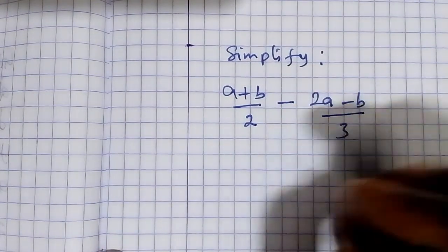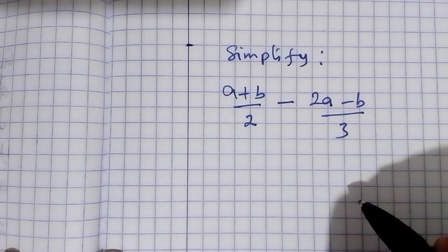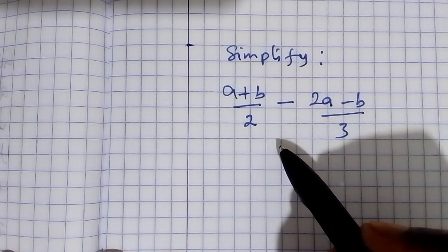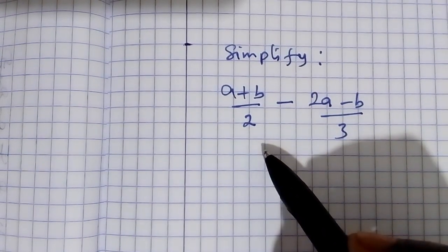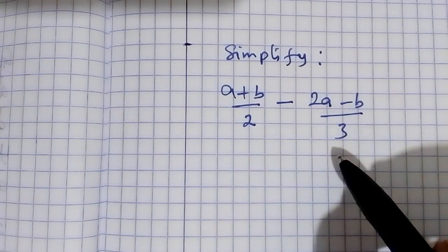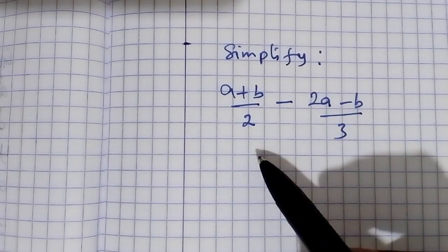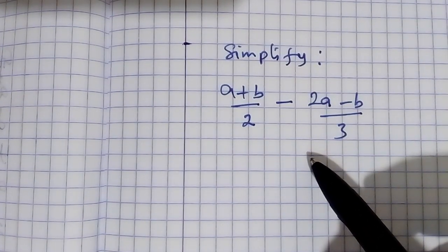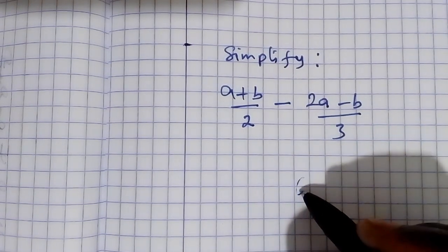So we can write, we can first of all find the LCM of 2 and 3. The LCM of 2 and 3 is 6. So we put 6 here.